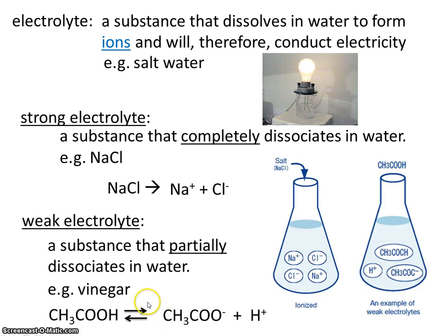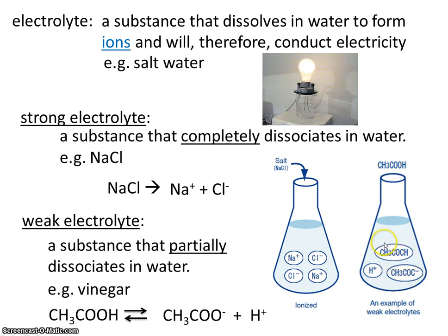We've got a picture that helps us understand what's going on here. If we add salt to water, we see the ions — sodium and chloride — and these conduct electricity. If we add vinegar to water, we discover that some of it breaks up, so we have H⁺ and the acetate ion. But a fair amount of it actually stays as the reactant vinegar. So we have all three: the reactant and both products. This is a weak electrolyte because it only partially breaks up.